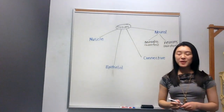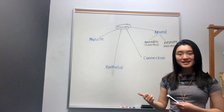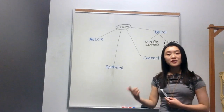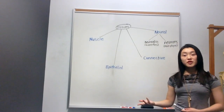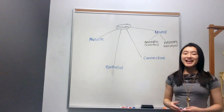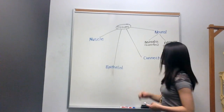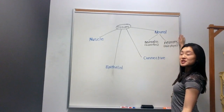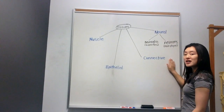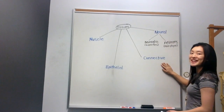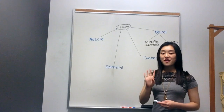So you can think of neurons as the main players. The neuroglia are supporting cells. They are responsible for providing nutrients, food, insulation, removal of waste, and many other functions. That's it for neural tissue.